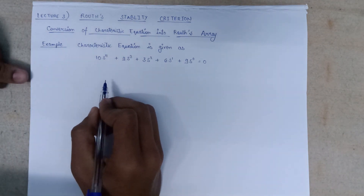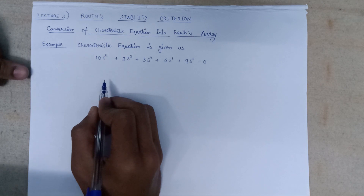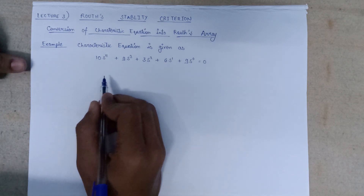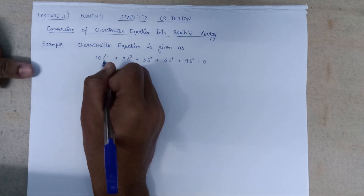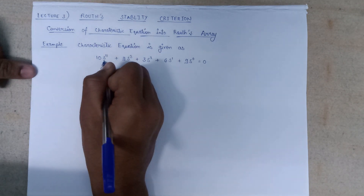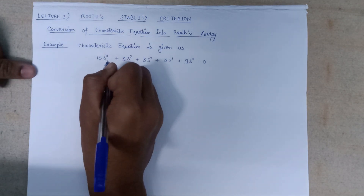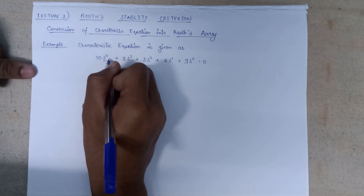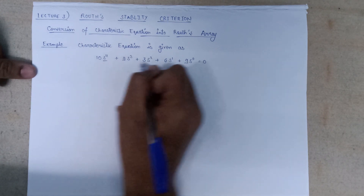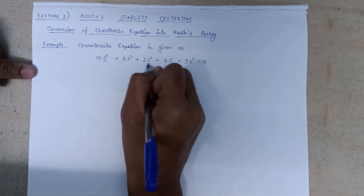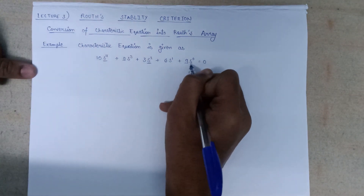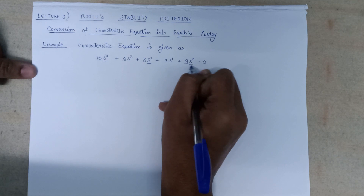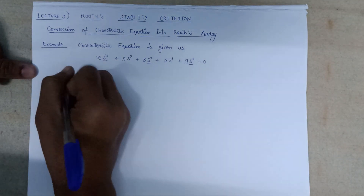What we are going to do is we need to separate out the even coefficients of the even powers of s, that is s to the power 4, s to the power 2, and s to the power 0.